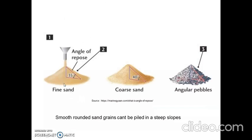Here we can see the angle of repose shown for three different materials: fine sand, coarse sand, and angular surface. For fine sand, the angle of repose is 35 degrees. For coarse sand, it is 40 degrees. And for angular surface, it is 45 degrees. This means smooth rounded sand grains cannot be piled in a steep slope, whereas for angular grains, you can find the steep slope being occupied at 45 degrees.